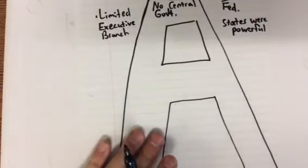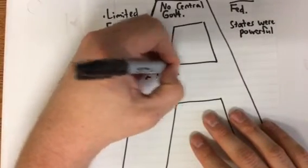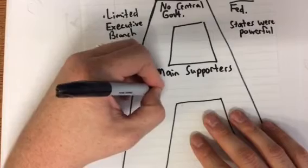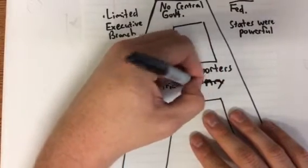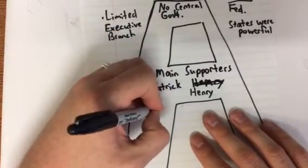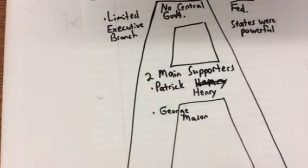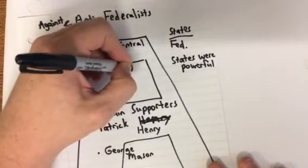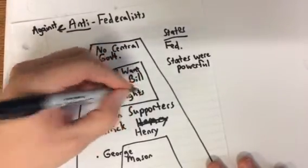The two main supporters for the Anti-Federalists are going to be Patrick Henry and George Mason.